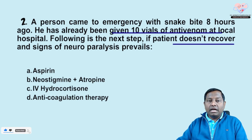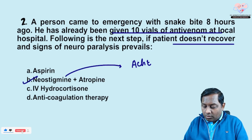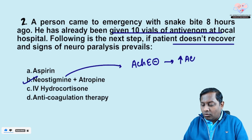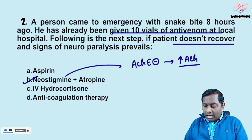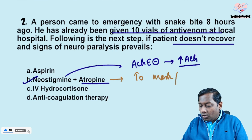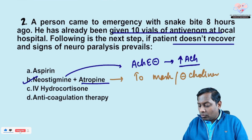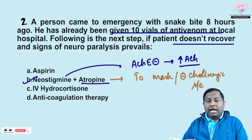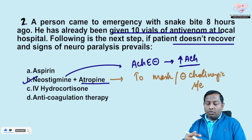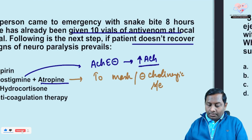If the patient doesn't recover after antivenom, we give neostigmine. Neostigmine is an acetylcholinesterase inhibitor that increases acetylcholine levels, helping recover muscle flaccidity. We also add atropine — the rationale is to mask or inhibit cholinergic side effects, because high acetylcholine can cause bronchoconstriction, cardiac effects, and increased secretions. Steroids or anti-coagulant therapy are not the next step here.